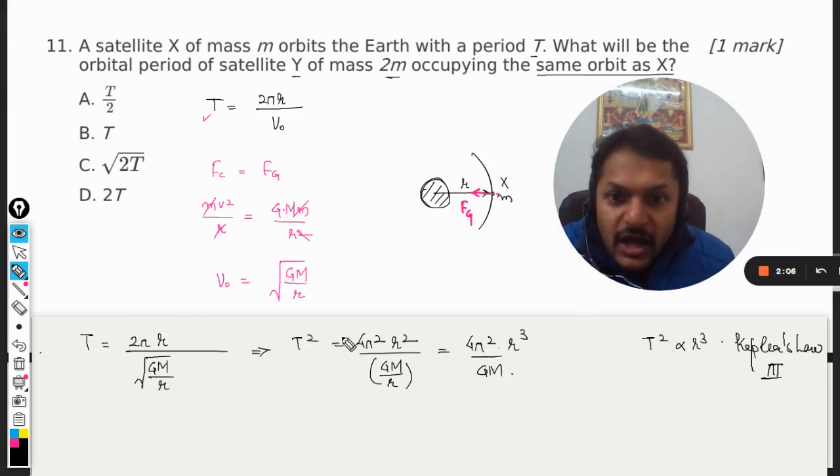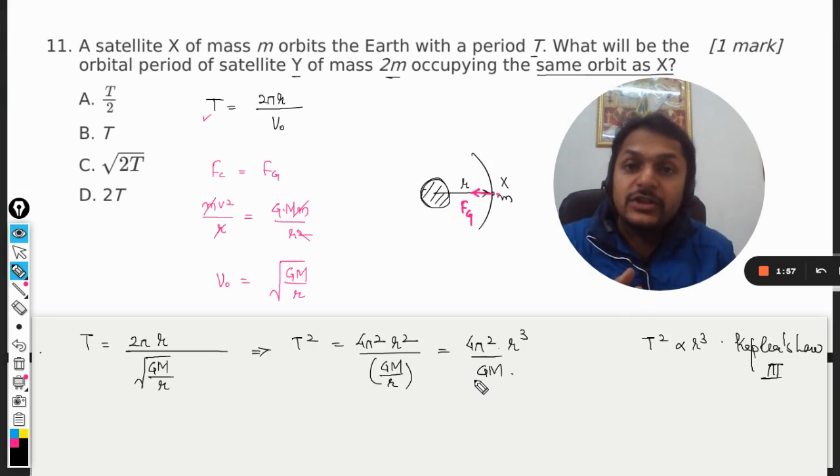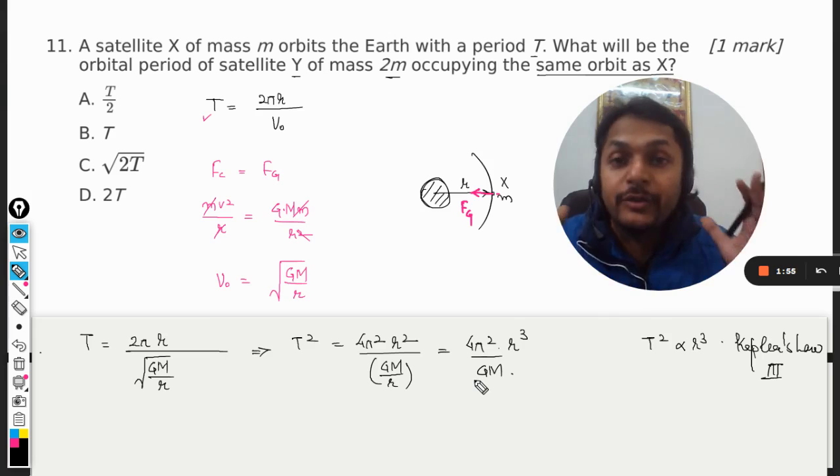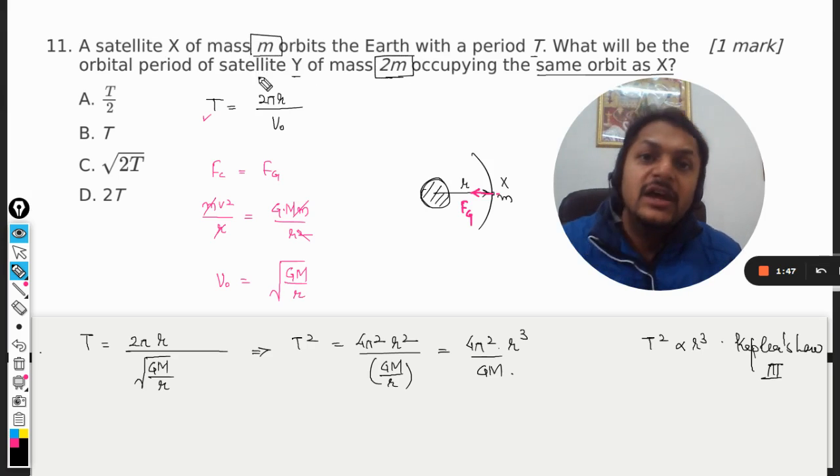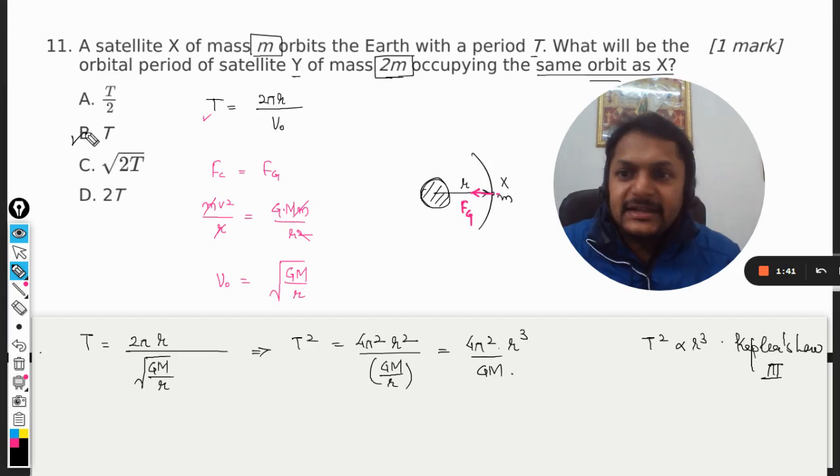Now from this expression it is evident that the time period for the revolution does not depend on the mass of the satellite. It means whether the mass is m or whether the mass is 2m, it doesn't actually matter to us until and unless the orbit is the same. If the orbit is same, the time period is going to be same. Hence our answer will be B.